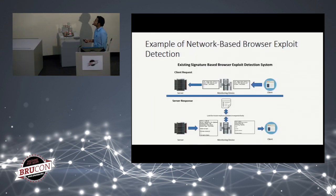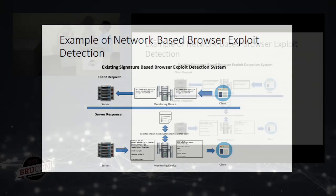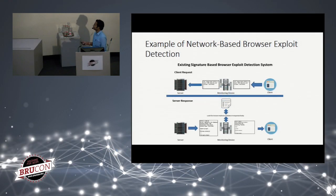This diagram shows how network-based detection works: the client requests a page through the monitoring device, which inspects the request and forwards it to the server. When the server responds, the monitoring device looks for known malicious tokens in the response body and raises an alert if malicious content is detected being delivered to the user's browser.